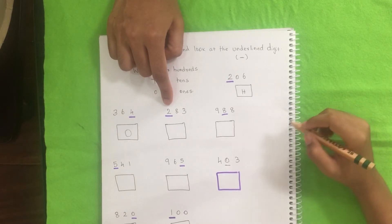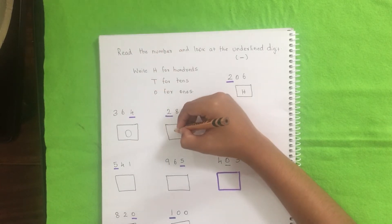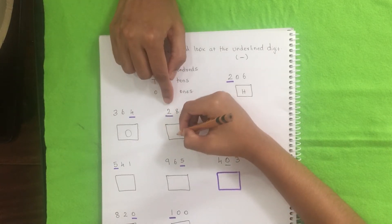Can you read the number first? Two hundred and eighty-three. So I have, my mom underlined two. Sorry. Two is in the? Hundreds. Yeah.